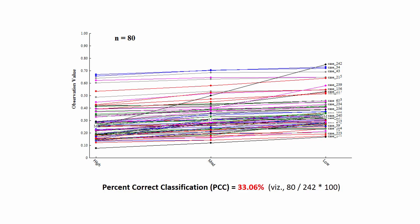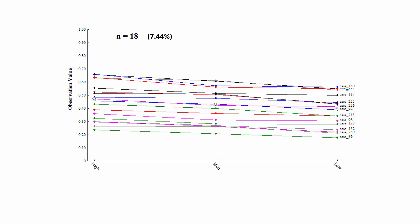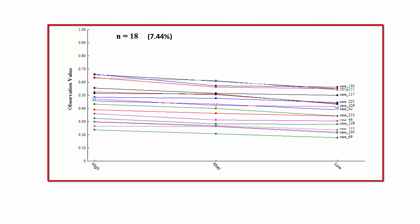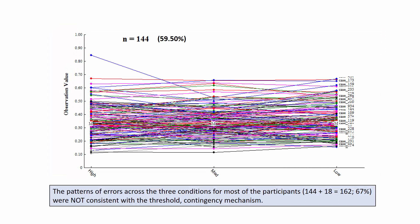Clearly, this low PCC value is not good news for the contingency mechanism. Interestingly, 18 persons — about 7% of the sample — revealed ordinal patterns that were exactly opposite of expectation, and it would be interesting to know what went wrong with these 18 participants. The remaining 144 persons in the study had patterns of errors that were not entirely consistent with the expected ordinal pattern.